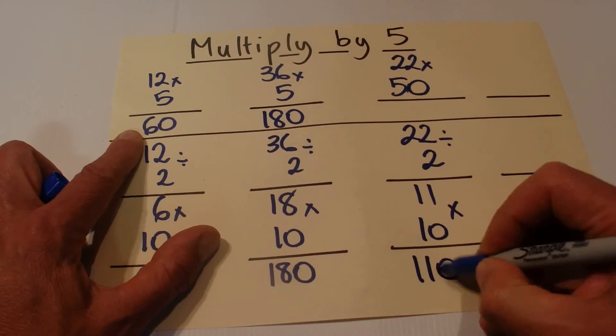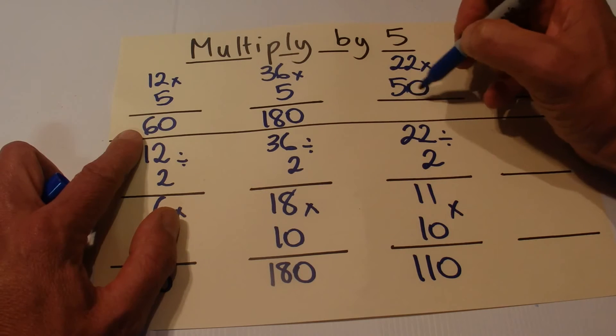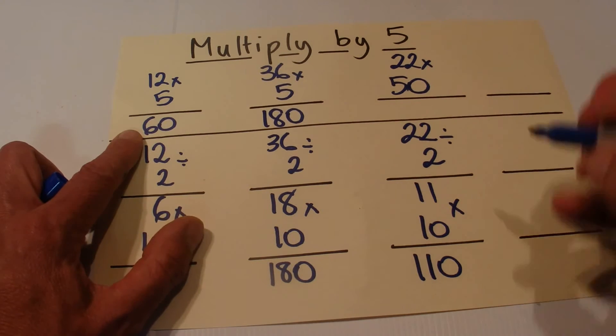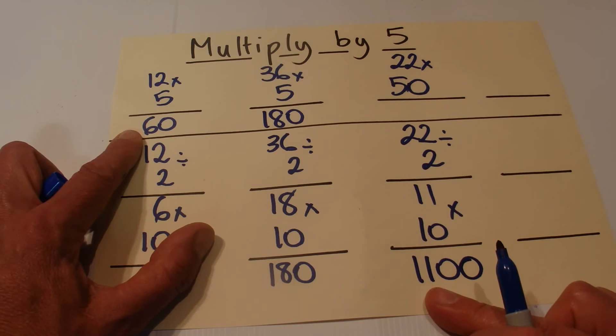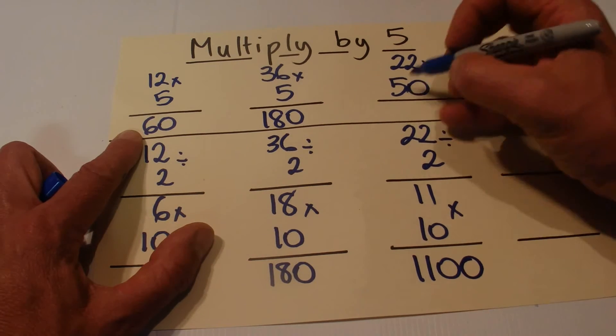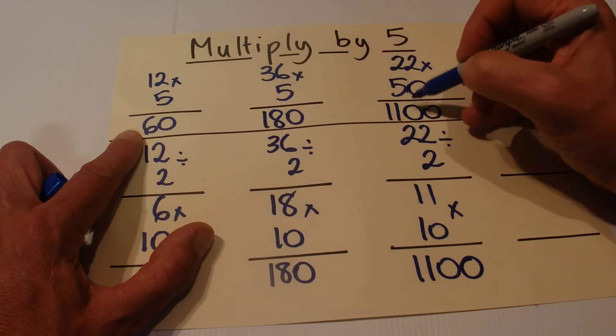But because we're multiplying by 50 rather than 5, we've got an extra 0 there, so we put an extra 0 on the end of our answer. The answer actually becomes 22 times 50 is 1100.